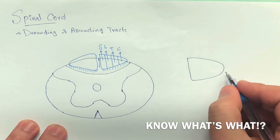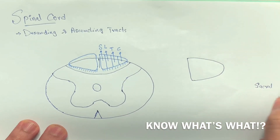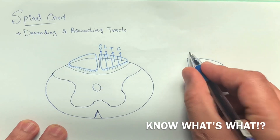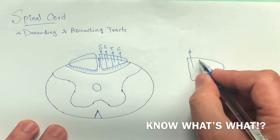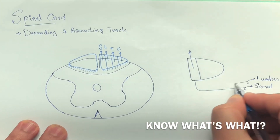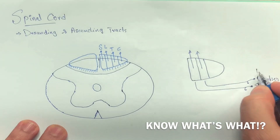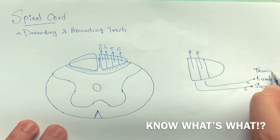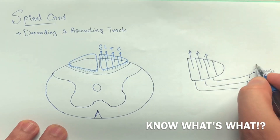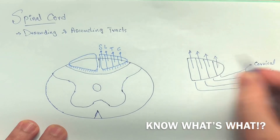Here we draw another diagram to show how these fibers go up. From the sacral segments, the fibers received by the sacral segments will be added more medial in this tract. And then the lumbar lateral to the sacral, and then thoracic. In this pattern, you go up: sacral, lumbar, thoracic, and cervical. This is how different fibers from the body are being added.